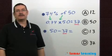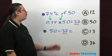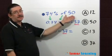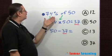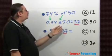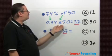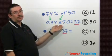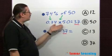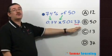To answer this question, let's first figure out what is 74% of 50. Change the percentage into a decimal. The word 'of' usually means multiply. When you perform this operation, you get 37.